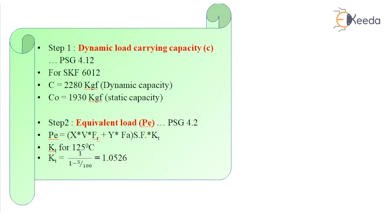Let's first find out the dynamic load carrying capacity C. From PSG for SKF6012, we get C equal to 2280 kgf (dynamic capacity) and C0 equal to 1930 kgf (static capacity). For finding the equivalent load PE, the formula is: PE equals X into V into FR plus Y into FA, whole multiplied by SF into KT. For KT, the temperature factor at 125 degrees centigrade, we get KT equal to 1.0526 by substituting in the formula 1 upon (1 minus 5 by 100).